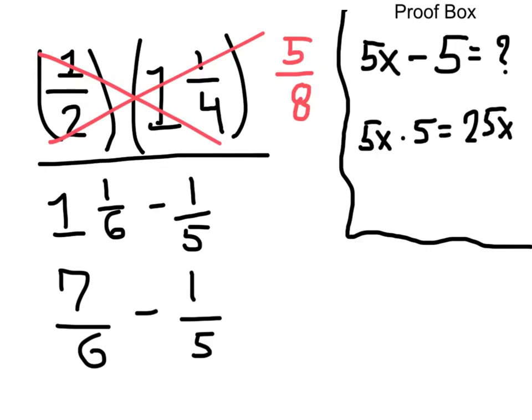Now that I'm searching for a common denominator, I realize that 30 is divisible by 6 and 5, so our common denominator is going to be 30. To get 6 to 30, I multiply it by 5, so I'm going to do the same to the numerator, and that 7 times 5 is 35.